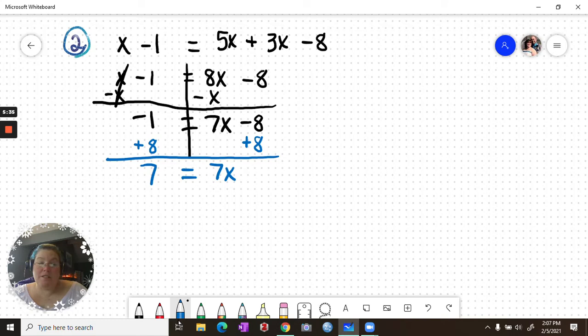This gives me positive 7 equals 7x. Order of operations backwards: undo addition and subtraction, and then undo multiplication and division. So now we will undo this multiplying by 7 by dividing by 7, and we get x equals 1.